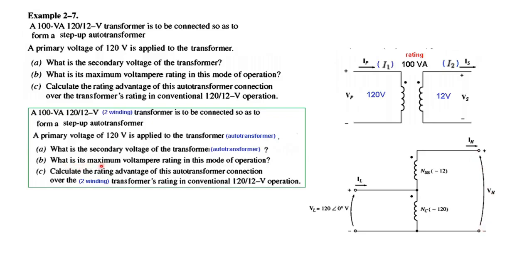Then what is the maximum volt ampere rating in this mode? So we have to find VA of this mode. We know the VA is 100 volt ampere in this one. But auto VA we have to calculate.